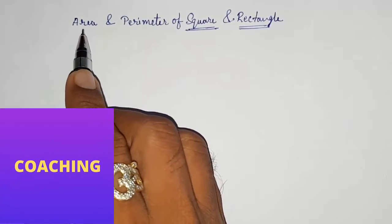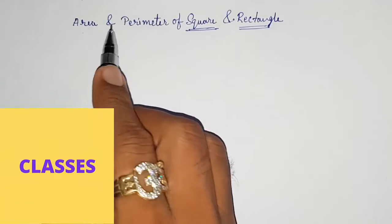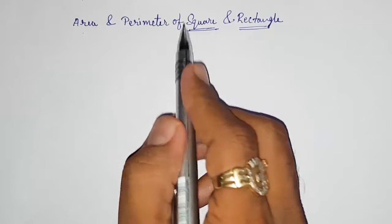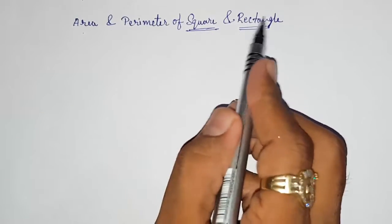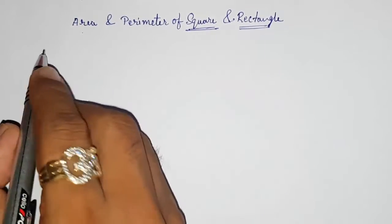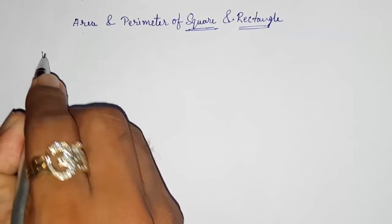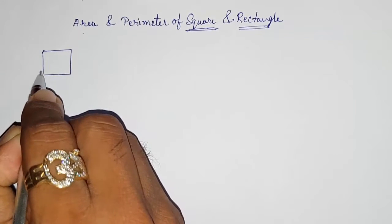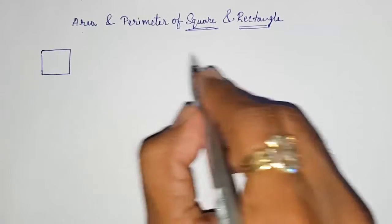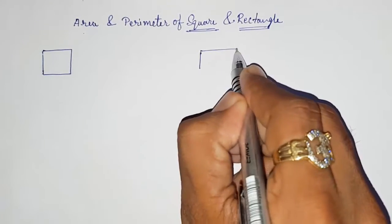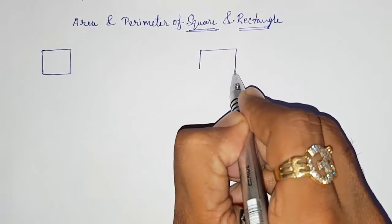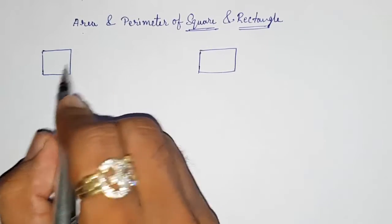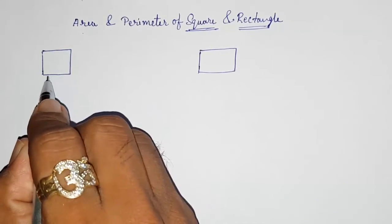Hello friends, in this video we are going to study about area and perimeter of square and rectangle. Square and rectangle are both two-dimensional figures. Look here, I am showing you — this is a square, and here also we are having length and breadth.